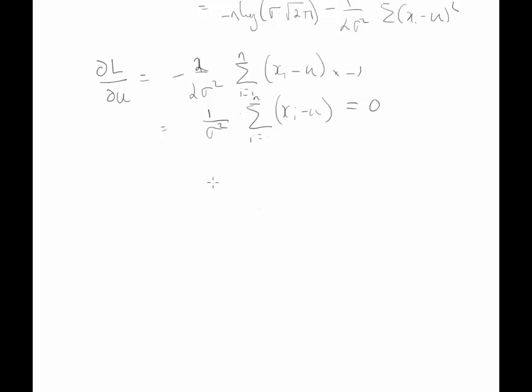So now what we have is 1 over sigma squared times the sum of xi minus 1 over sigma squared times n mu equals 0. So now if we take that on the other side, what we should have is 1 over sigma squared times the sum of xi equals, the sum of a constant, because we have n observations, so we have n mu.